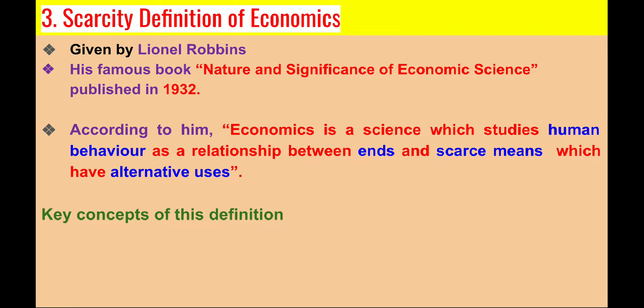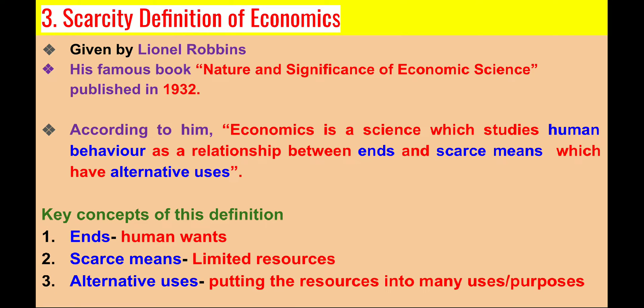In this definition, Robbins has used three basic concepts: ends, scarce means, and alternative uses. These are the three elements on which Robbins' definition stands. Here ends imply human wants, scarce means refers to limited resources, and alternative uses means we can put the limited resources into several or multiple purposes. This key concept will be discussed in the key features of this definition in the next slide.